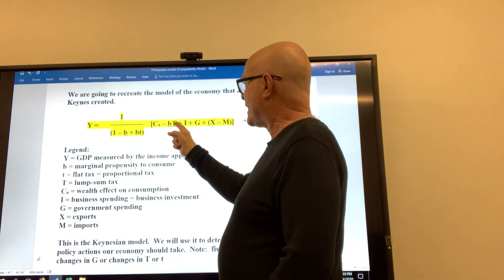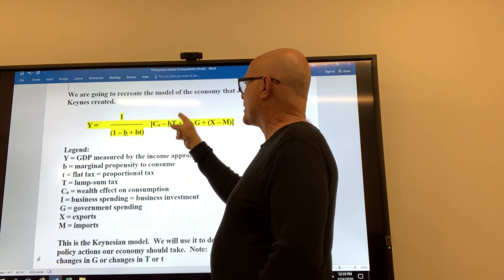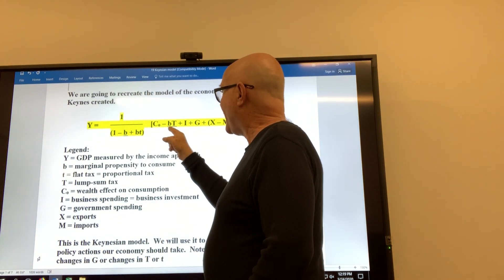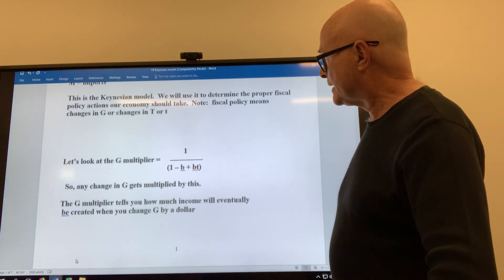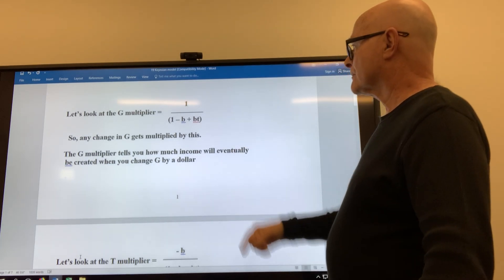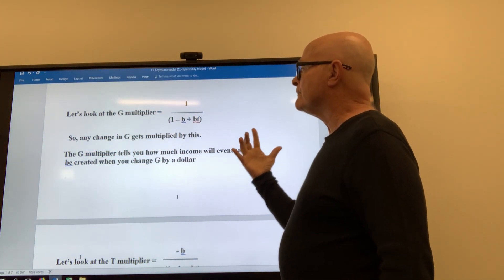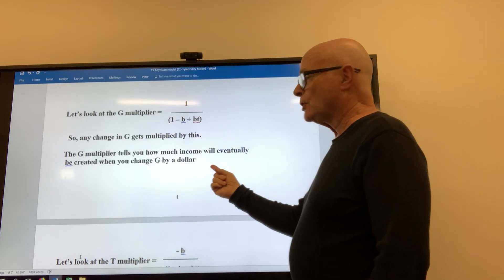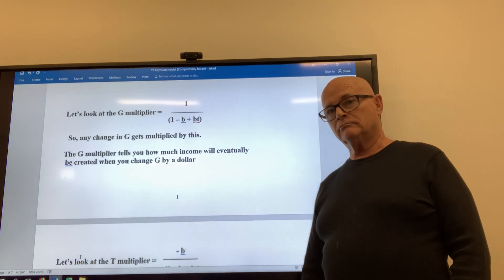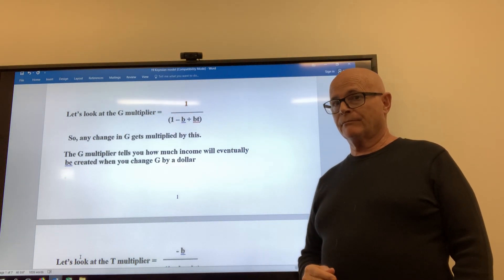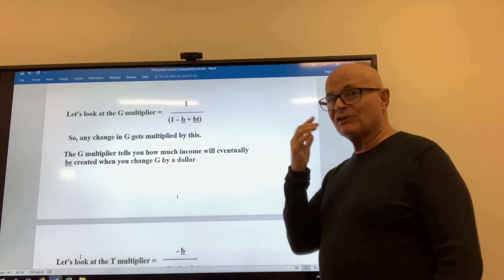For taxes, we're going to use capital T, the lump sum tax. If you increased or decreased or changed taxes by one, that change would get multiplied by minus b and then times this. So let's look at what the multipliers would be for government spending. It's this. So basically, to summarize, the G multiplier tells you how much income will eventually be created when you change G by a dollar. We're talking about all those rounds of spending until it reaches zero. It takes months, almost a year probably for fiscal policy.